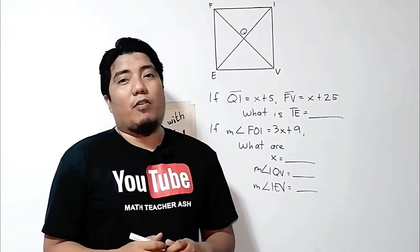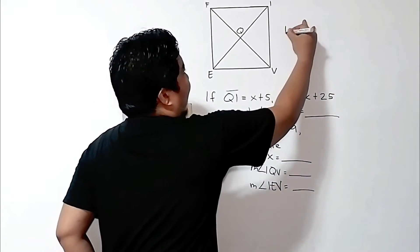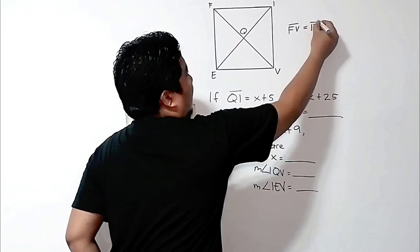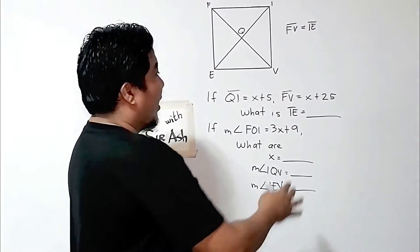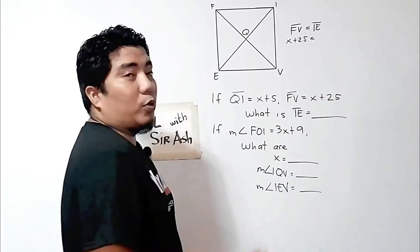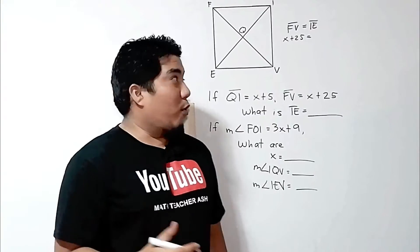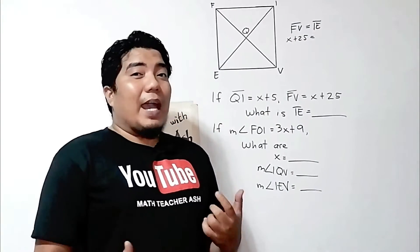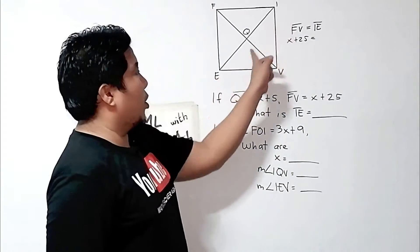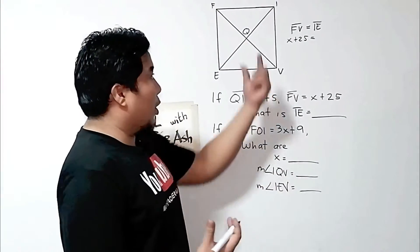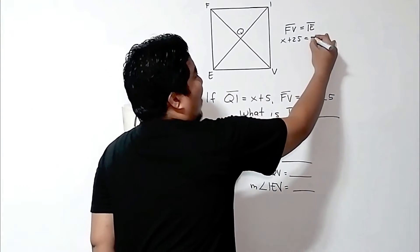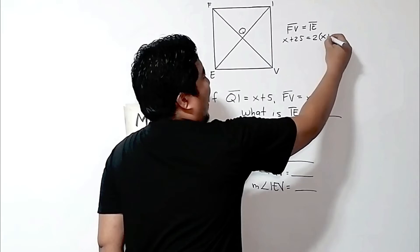Therefore, we can say that line segment FV is equal to line segment IE. If that is the case, then FV is X plus 25, and we can also give the expression X plus 25 for IE. However, we need to solve the actual measurement. Since we have QI as X plus 5, having two measurements of QI will give us the measurement of IE. Therefore, we can have 2 times (X plus 5).